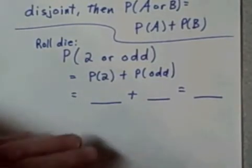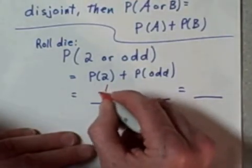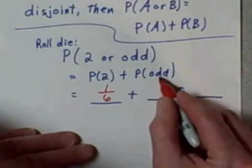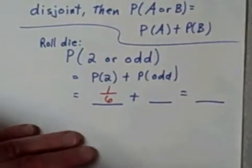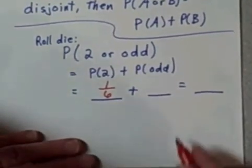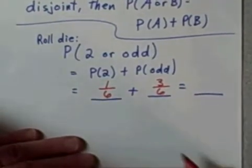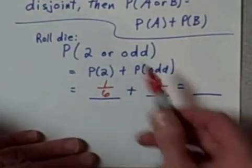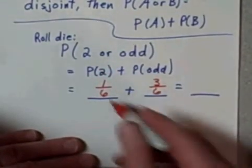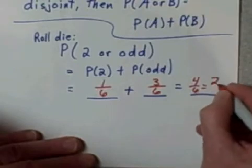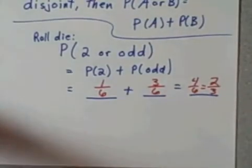So, the probability of rolling a two, well, there's only one two on a die, and there are six outcomes. The probability of rolling an odd number, the odd numbers are one, three, and five, so there's three of those out of six possible outcomes. So, the probability of either one or the other of these happening is going to be four out of six, which reduces to two-thirds. The probability of rolling a two or an odd number is two out of three.